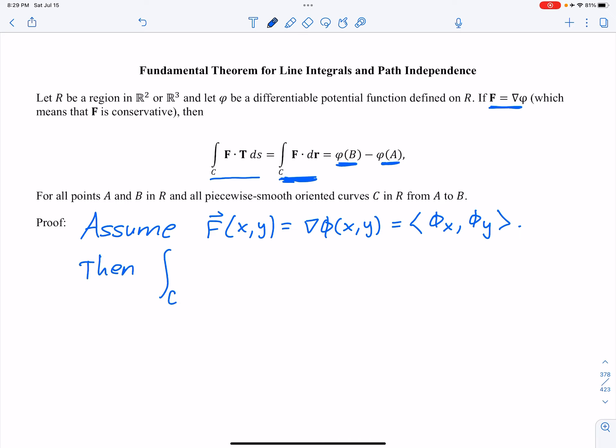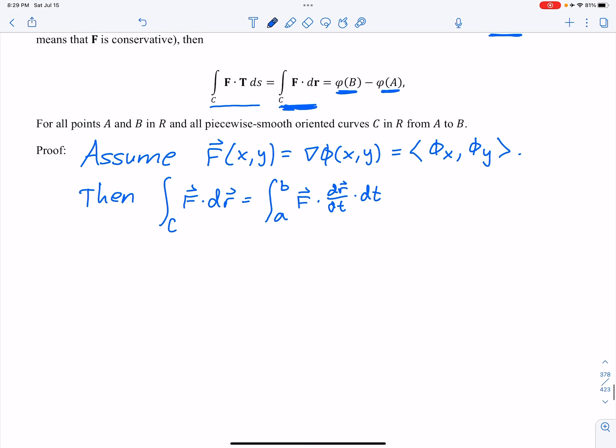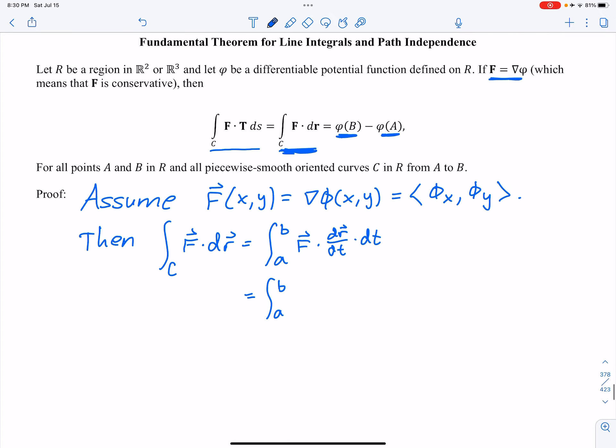then the integral over C, the line integral F dot dr is going to be, alright, we can break this up using something from calc 1. This is the chain rule, dr dt times dt. And then that inside there, this is going to take a little bit for us to really get the idea. Now, I want to make sure that you know that r of t, our path, is defined x of t, y of t. We need to state that,